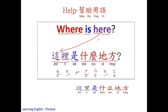Where is here? This place, where is here. Repeat after me: 这里是什么地方.